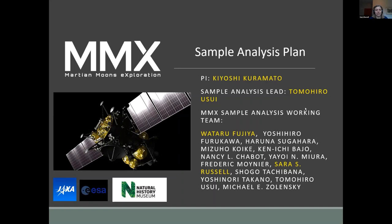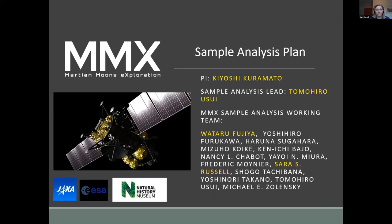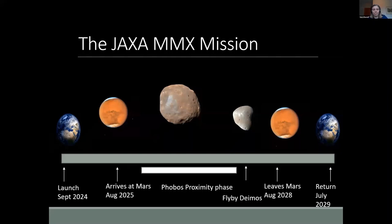The PI is Kiyoshi Kuramoto from Hokkaido, and the sample analysis lead is Tomo Usui at JAXA. I'm a member of the sample analysis working team. This is also a good time to give this talk because our team has been working over the last few months to produce a preliminary sample analysis plan. The results have produced a paper led by Wataru Fujiya just submitted to Earth, Planets and Space — they're doing a special issue on MMX.